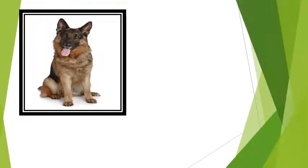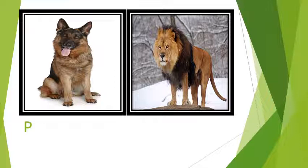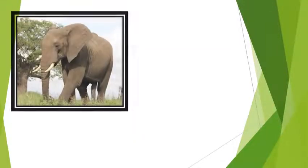So first picture is of dog. Dog is a pet animal, so we will put P. Then next is of a lion. Lion is a wild animal, so we will put W. Next picture is of elephant. Elephant is a wild animal, so W will come.